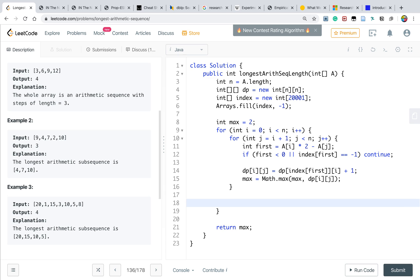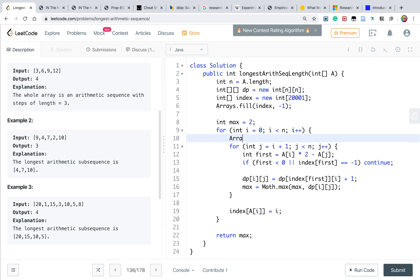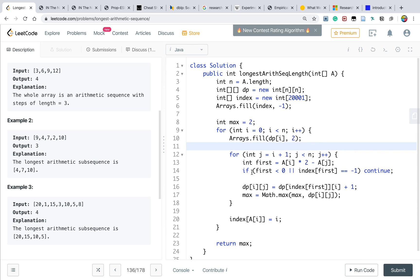And out of this full loop, the current element can be used for future use. So index[a[i]] will equal to i. Okay. One thing to not forget, we need to initialize the dp array, dp[i] equal to 2. The same reason, because there are at least two elements. So it's at least 2. Okay.